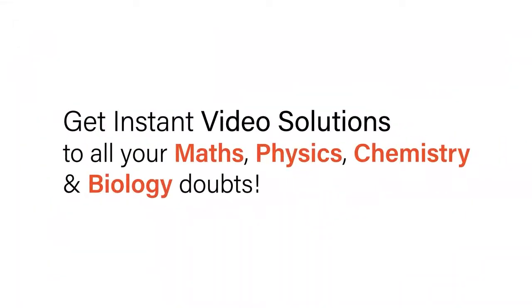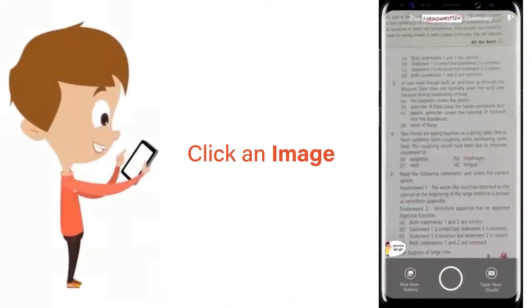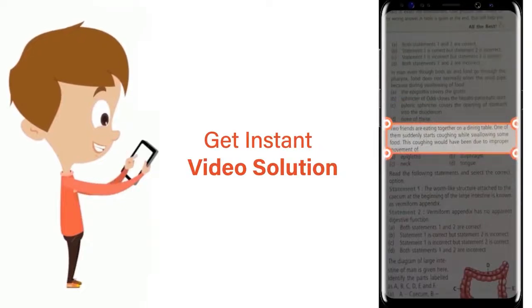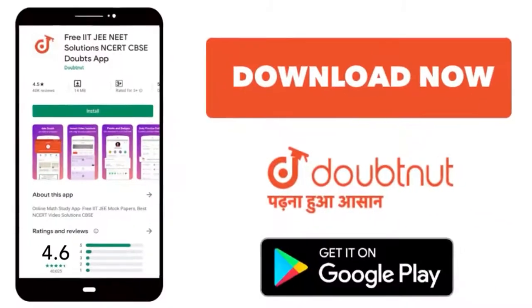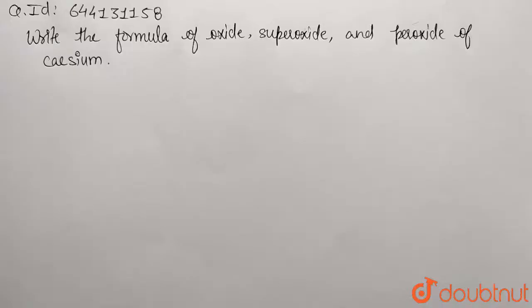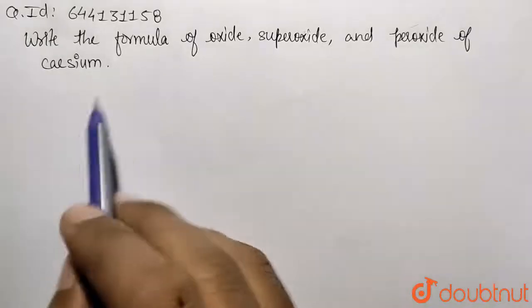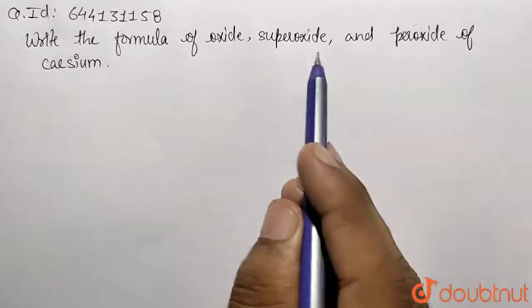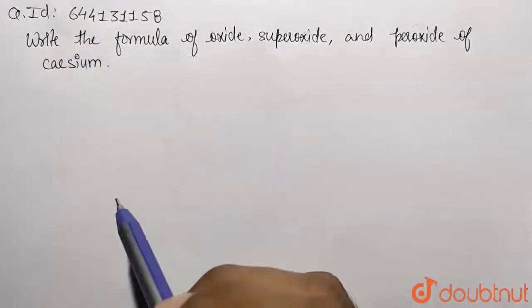With DoubtNet, get instant video solutions to all your math, physics, chemistry, and biology doubts. Just click the image of the question, crop it, and get instant video solution. Download DoubtNet app today. Hello students, in this given question we need to write the formula of oxide, superoxide, and peroxide of cesium.